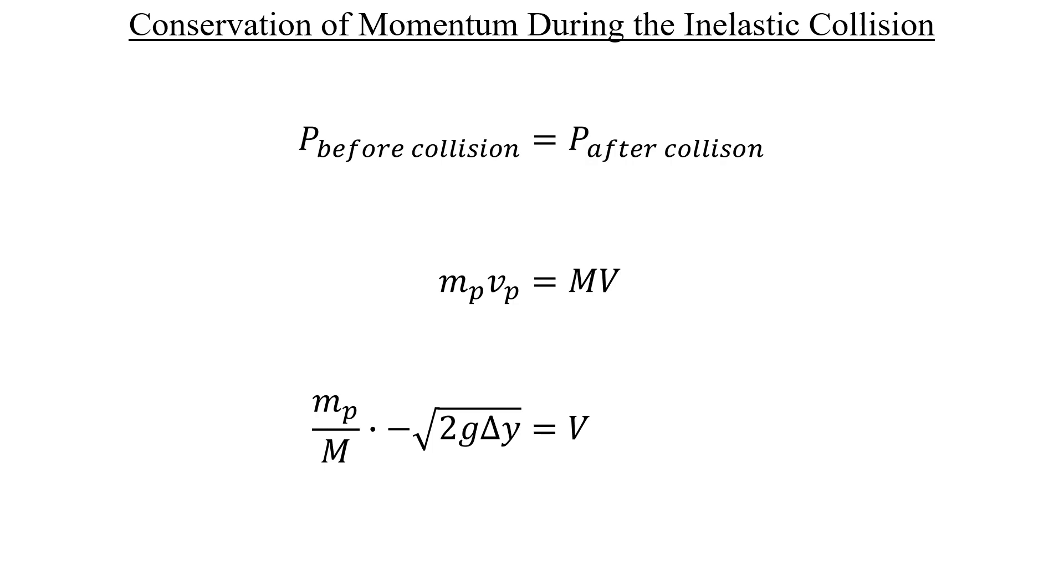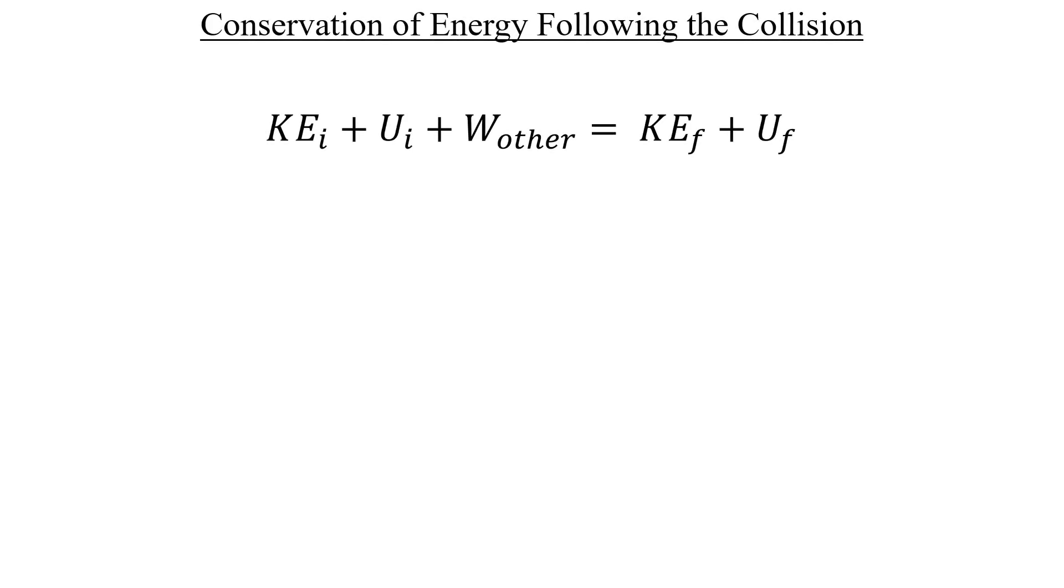With the momentum taken care of, we can move on to the conservation of energy and see what we can eliminate here. Once these two combined objects start to move towards the floor, there's no frictional interaction or anything weird doing work on them, so the other work term can be set to zero. Also, once the frame and the putty hit the floor, they can't continue to move, so the kinetic energy has to be zero there as well.